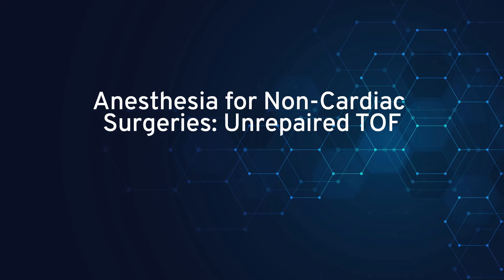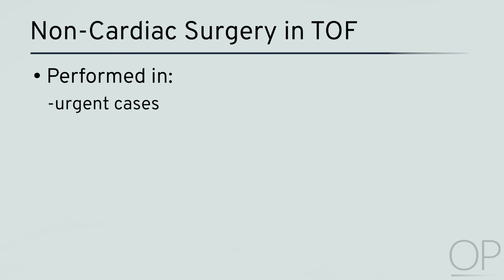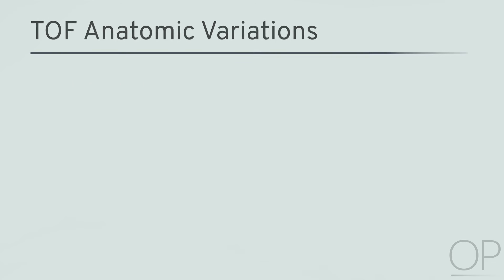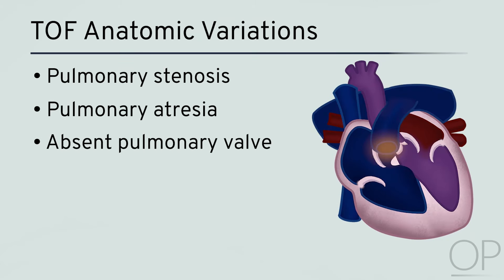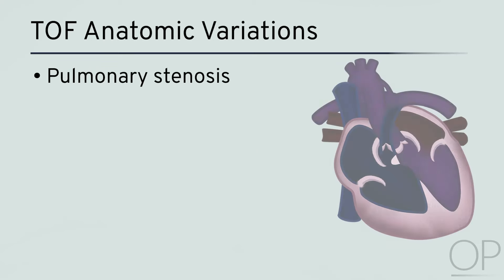Anesthesia for Non-Cardiac Surgeries: Unrepaired Tetralogy of Fallot. Non-cardiac surgery in patients with unrepaired Tetralogy of Fallot is usually only performed in urgent cases or situations where additional congenital anomalies have to be addressed before the cardiac repair. There is a wide range of anatomic variations, from the classic description with pulmonary stenosis to types with pulmonary atresia, absent pulmonary valve, or only minimal outflow obstruction — the so-called Pink Tet. This video will focus on the most common form: Tetralogy of Fallot with Pulmonary Stenosis.